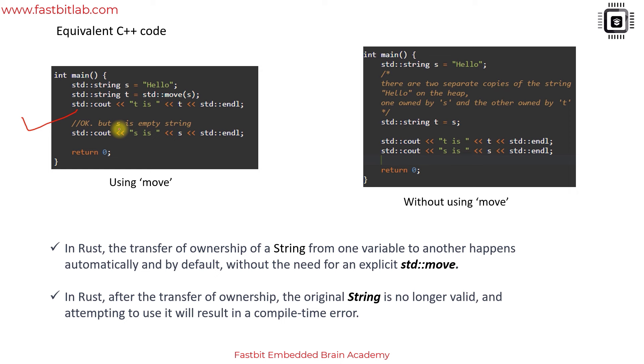But still s is uninitialized here - s is an empty string because its data is moved to t. Here you have to explicitly mention the call to move. If you don't use move and you simply do t equals s, then there will be two separate copies of this data.